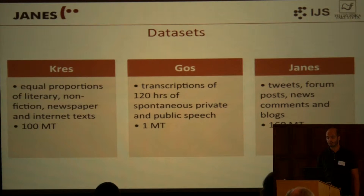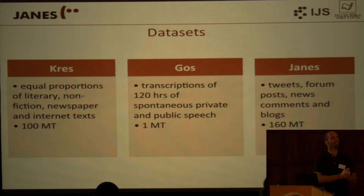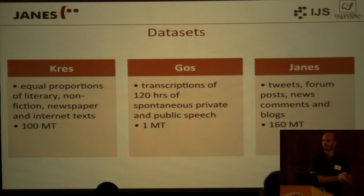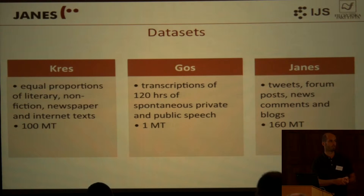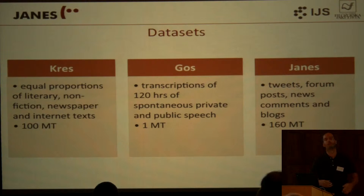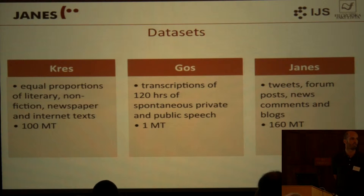Regarding the data sets: as the representative of written language, they use the CRESS corpus — a balanced corpus of 100 million tokens containing equal proportions of literary, non-fiction, newspaper, and internet texts. For spoken communication, they use the GOS corpus, a transcript of 120 hours of spontaneous speech at 1 million tokens. For CMC, they use the Janes corpus — 160 million tokens of tweets, forum posts, news comments, and blogs from the Slovenian web.